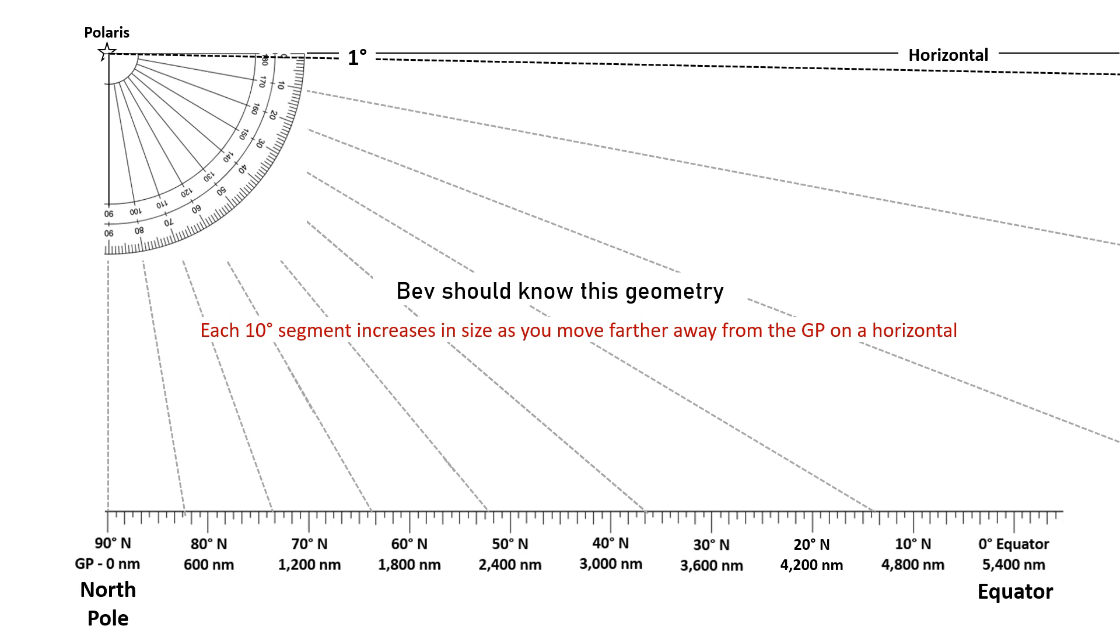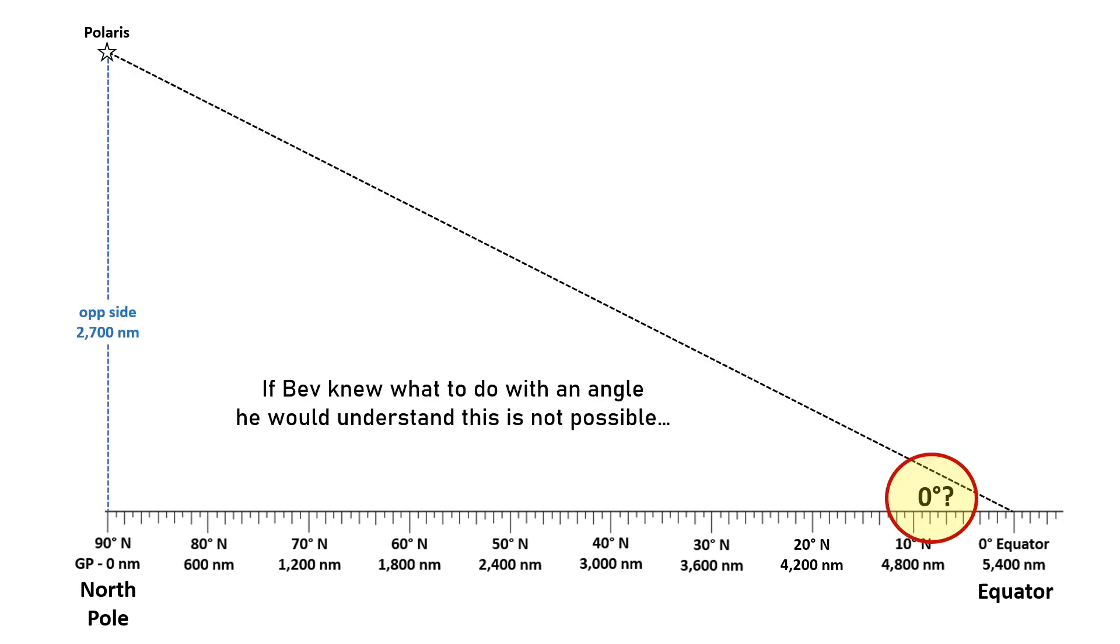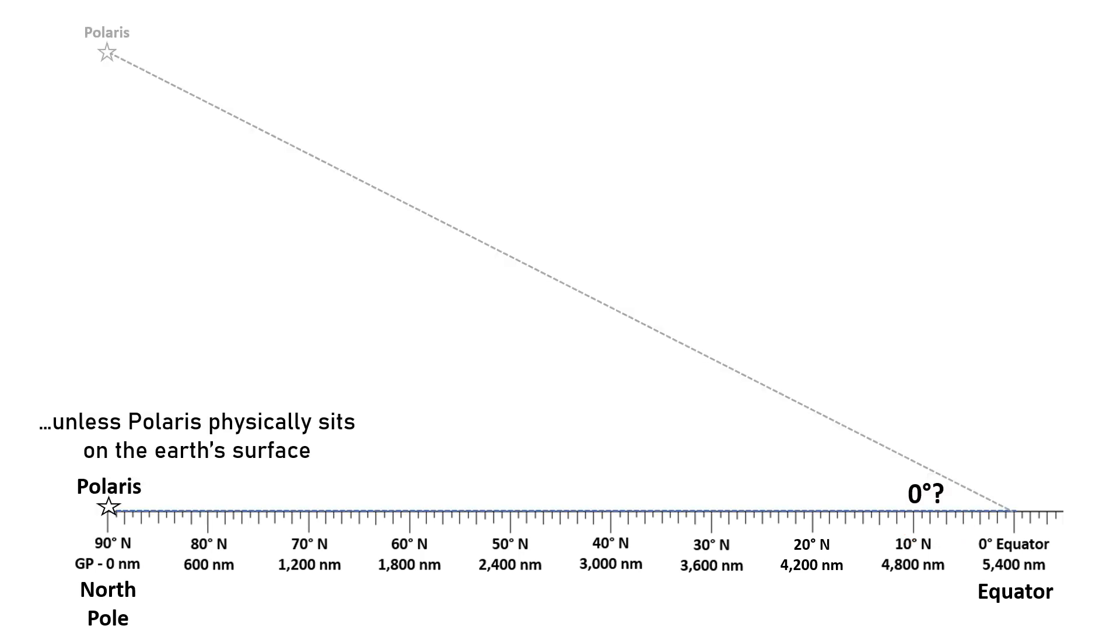So the question is, Bev, why don't you know this geometry? But to be honest, I didn't even need to go through all those calculations because if Bev knew what to do with an angle, he would understand that this observation was not possible—unless he thinks that Polaris physically sits on the Earth's surface when viewed from the equator.